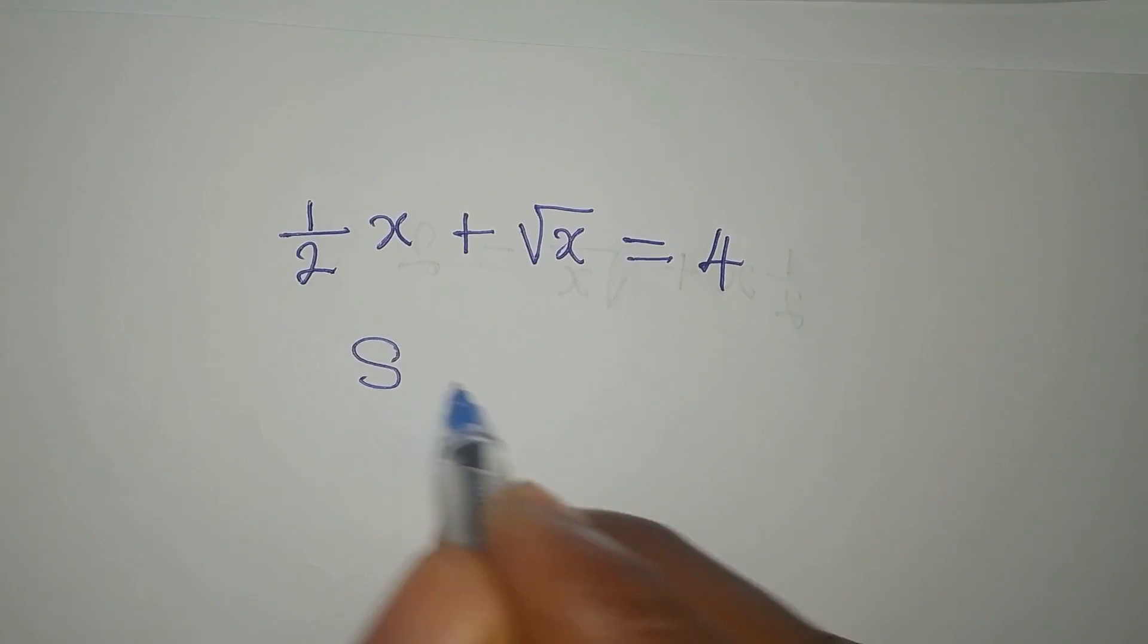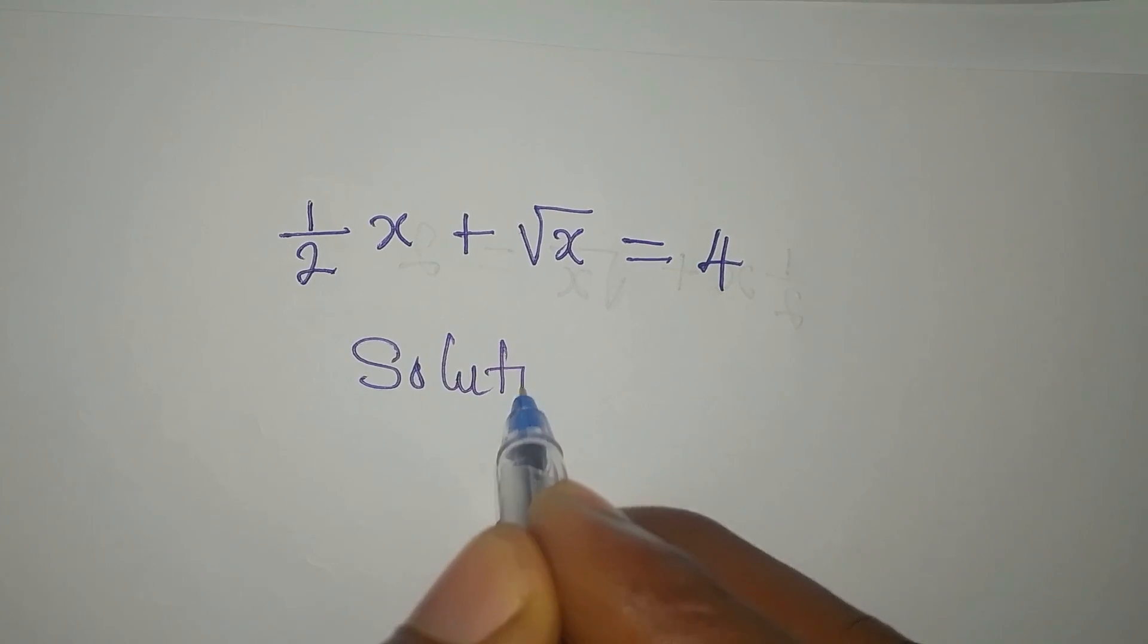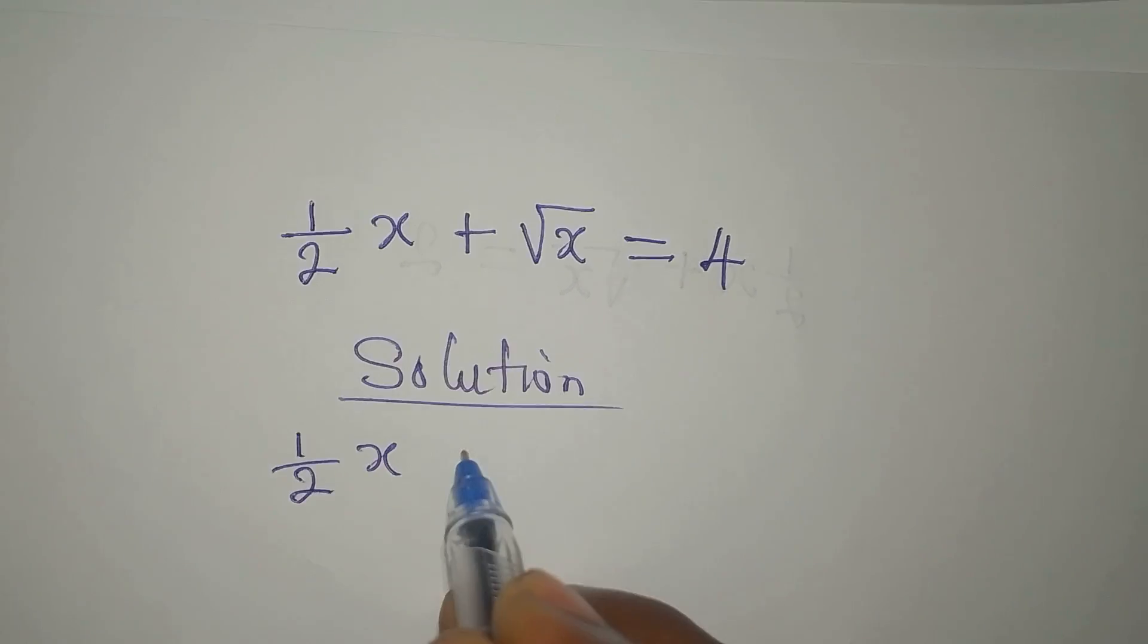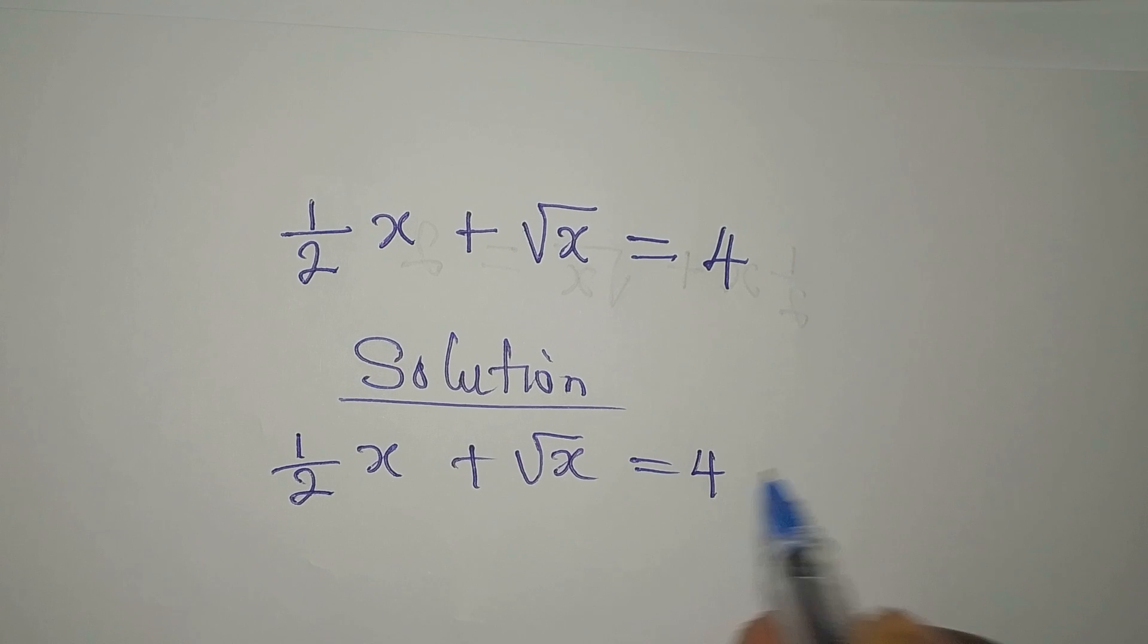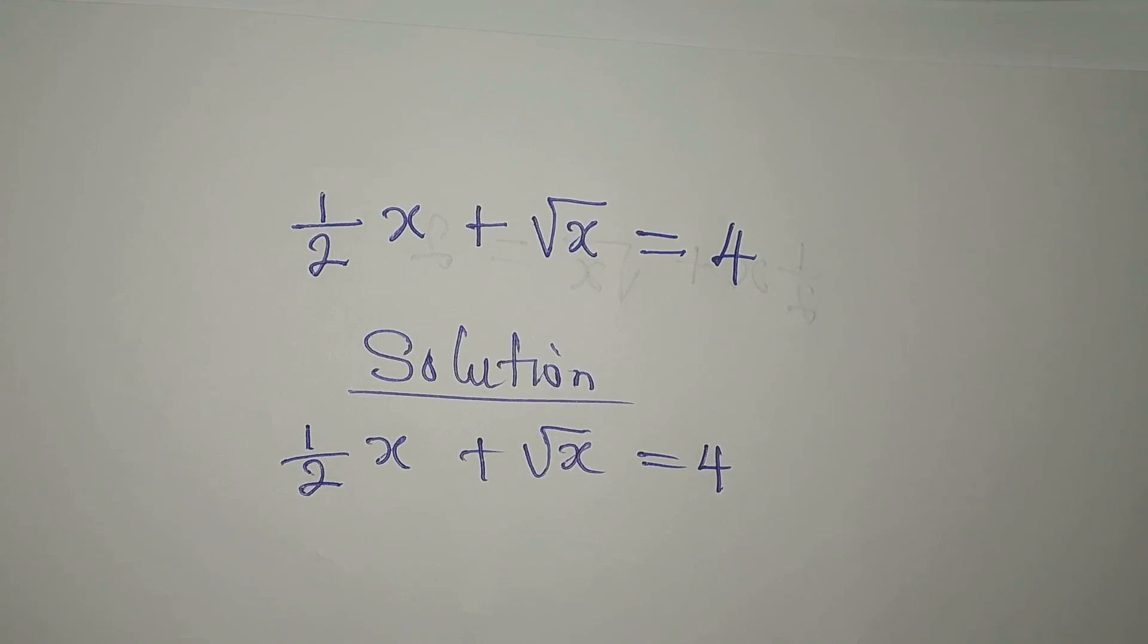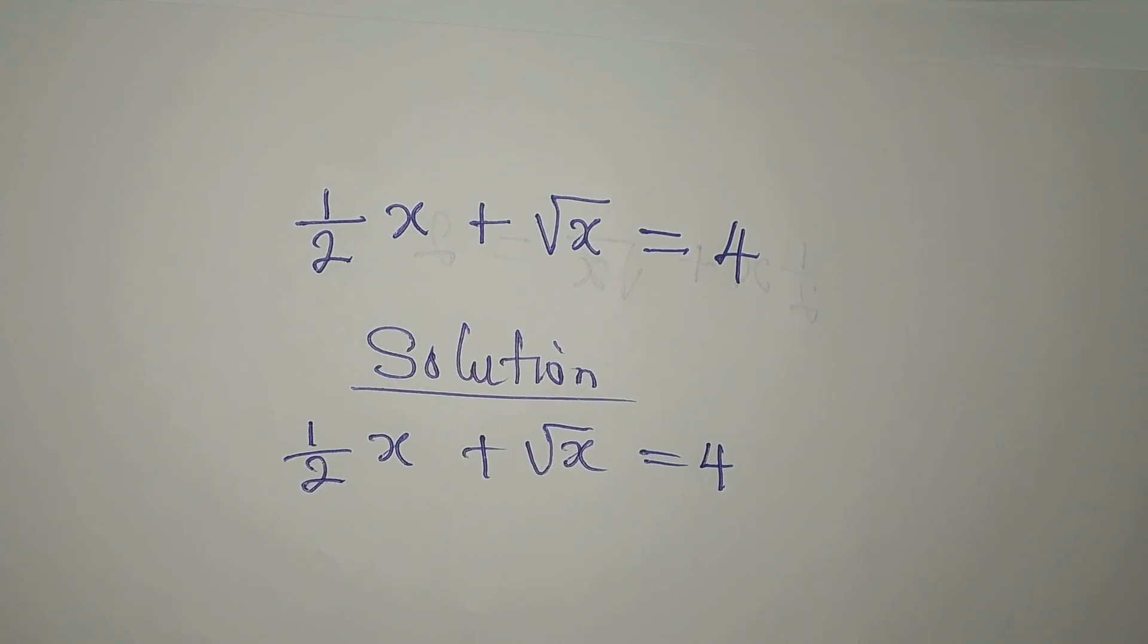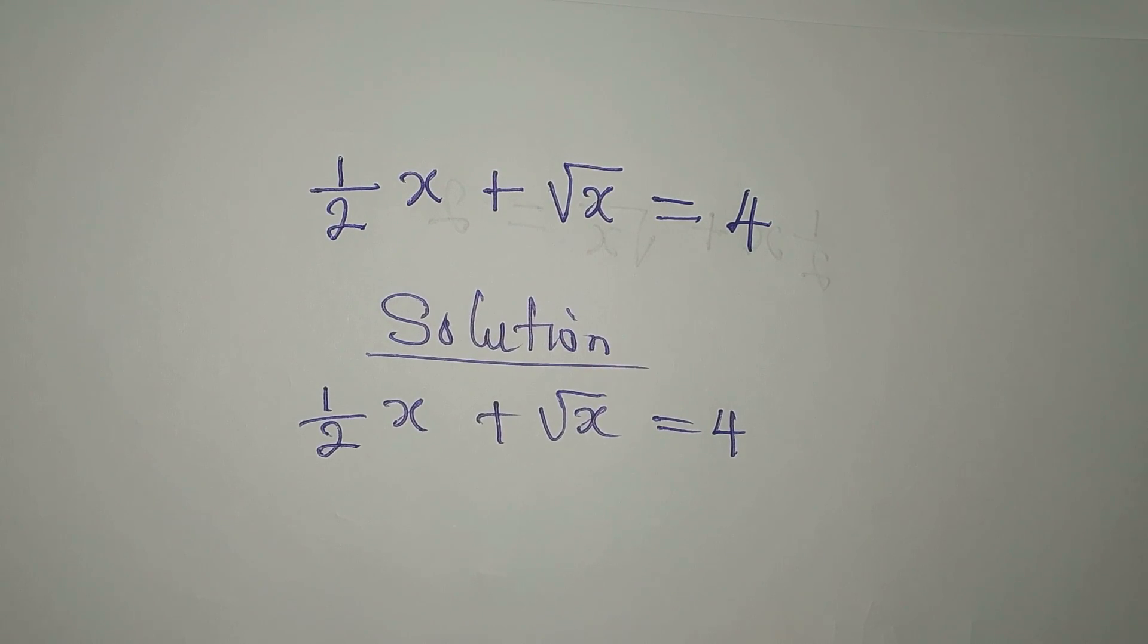Hello everyone. So we have 1 over 2x plus square root of x equals 4. My question is how many of you here can solve this problem to the end without anybody guiding you?